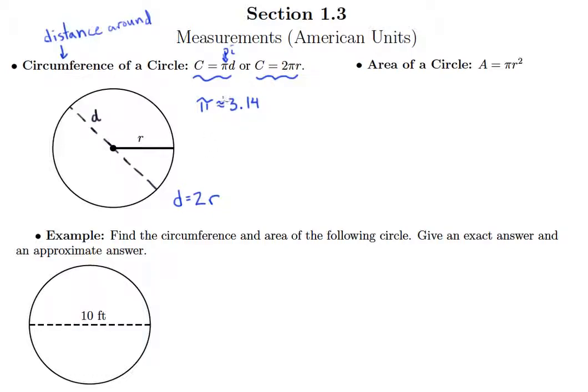Basically what pi is, is it was discovered that anytime you have a diameter of a circle, all you have to do is multiply it by this number pi and that will give you the circumference, and it works no matter how large or small the circle is.